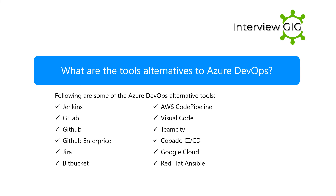What are the tool alternatives to Azure DevOps? Following are some of the Azure DevOps alternative tools: Jenkins, GitLab, GitHub, GitHub Enterprise, Jira, Bitbucket, AWS CodePipeline, Visual Studio Code, TeamCity, Copado CI/CD, Google Cloud, and Red Hat Ansible.